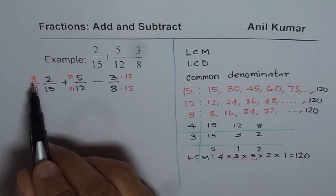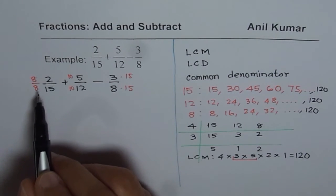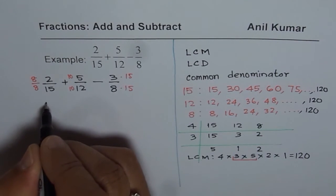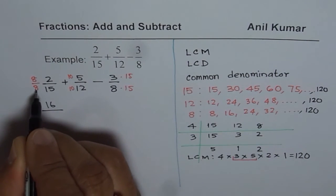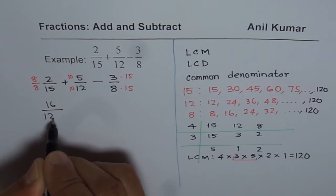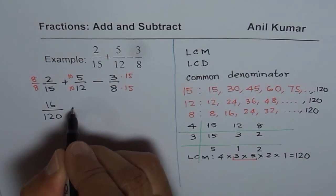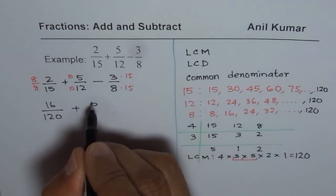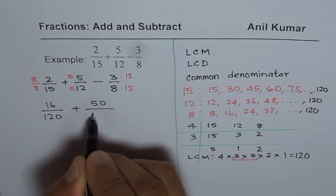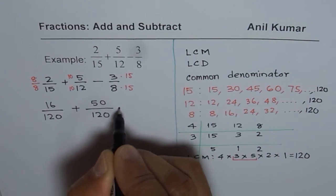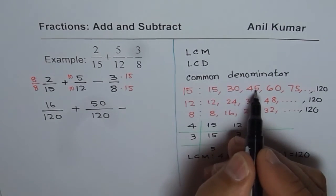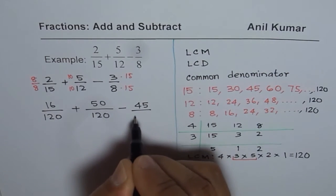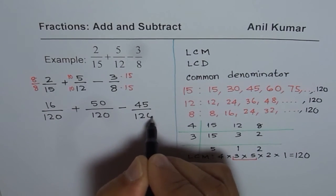I hope this step is clear. Multiplying and dividing by the same number is as good as multiplying by 1. So it does not change the number. 8 times 2 is 16. So we get 16 divided by 120. We have already done our calculations. 5 times 10 is 50 and then we have 120 in the denominator minus 15. 3 times is 45.